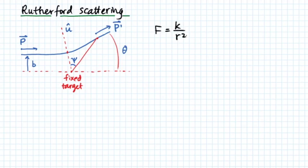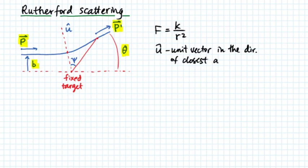In the diagram shown, we have the usual quantities: b the impact parameter, p the incoming momentum, p prime the outgoing momentum, angle theta the scatter angle. Then we have a unit vector u, which is defined in the direction of the closest approach. We can define the position of our projectile by angle psi, which measures angular position of the particle with respect to the unit vector u.